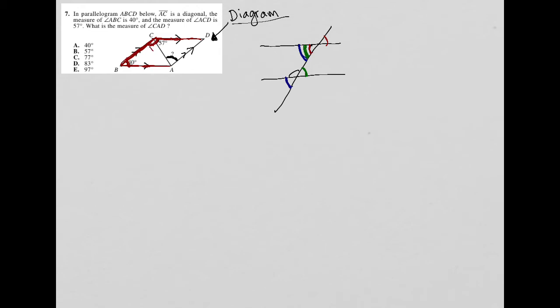So if I call this x, I can say 40 plus 57 plus x must be equal to 180 because those two angles are supplementary. So I'd have 97 plus x equals 180. Subtract 97 from both sides and go to my calculator just to make sure that I'm doing my math correctly. So 180 minus 97 is 83. So I get x equals 83.